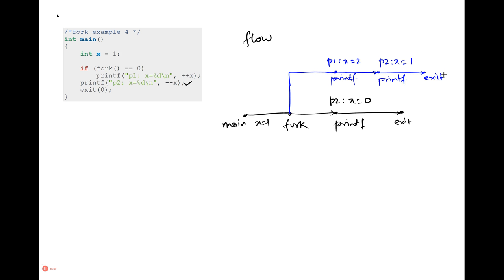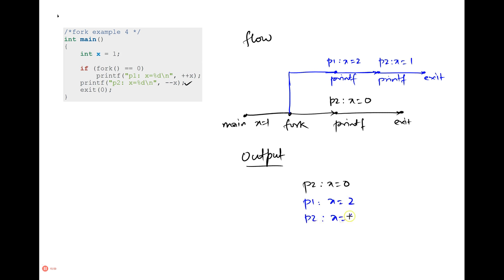So the output in this last example is: 'p2 x equals 0' from the parent, then 'p1 x equals 2', and then 'p2 x equals 1' from the child. That's all for this example.